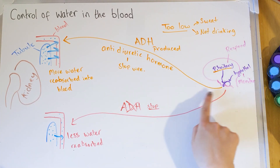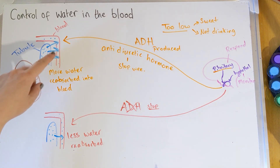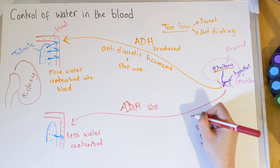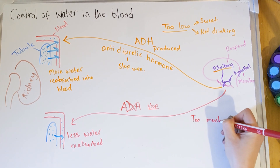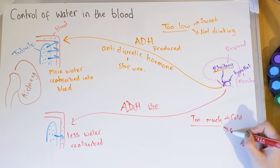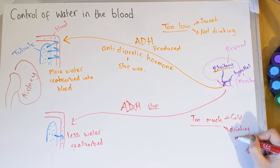To summarize from the top: the hypothalamus in the brain detects water level changes; the pituitary gland carries out the response by releasing the hormone ADH. If there is not enough water in the blood, ADH is produced so more water is reabsorbed from the tubule into the blood, returning the blood to normal. If there is too much water — because you're not sweating or you're drinking a lot — ADH production stops, so less water is reabsorbed and the blood becomes less dilute.